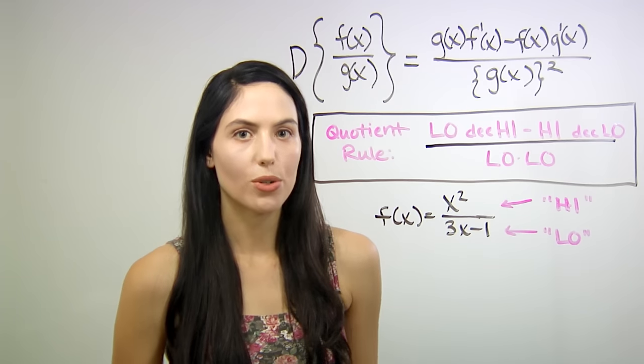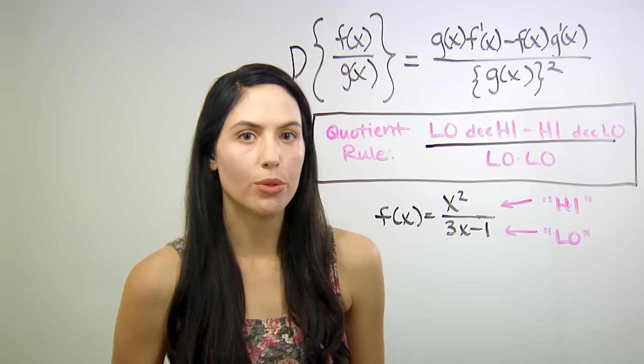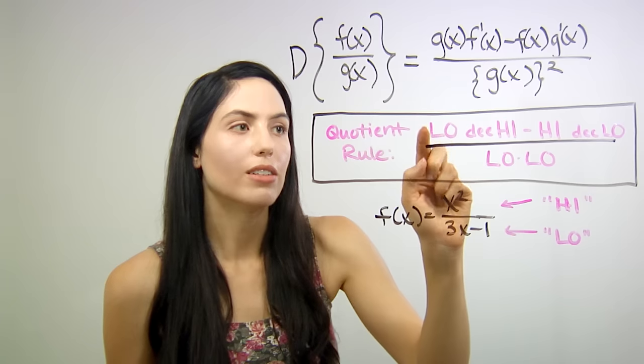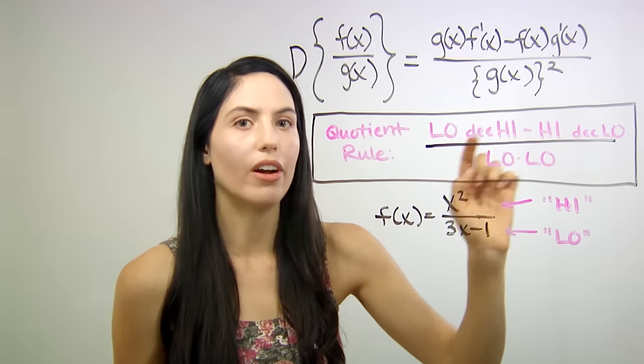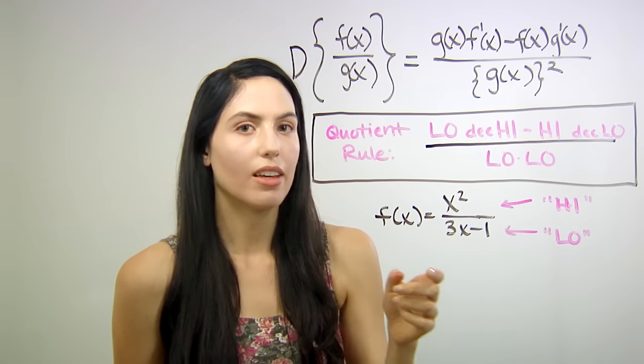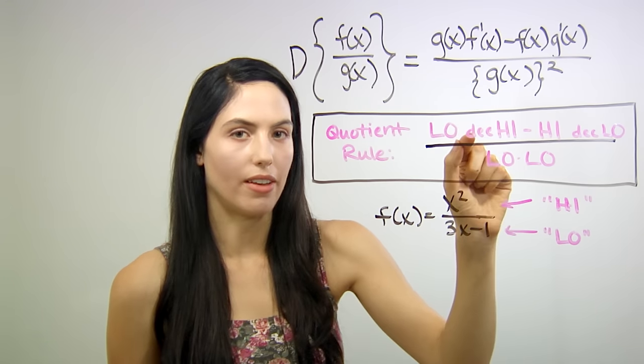Alright, so here's the shortcut. You can remember the quotient rule by just remembering low d high minus high d low over low low. d just means the derivative of.